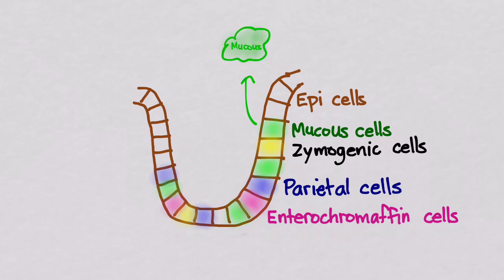There's a whole bunch of different kind of cells here. You've got your epithelial cells, the mucus cells which secrete mucus, the zymogenic cells that secrete pepsinogens, parietal cells that release hydrochloric acid as well as intrinsic factor. And finally, the enterochromaffin-like cells that secrete histamine and gastrin, both of which stimulate acid secretion as well.